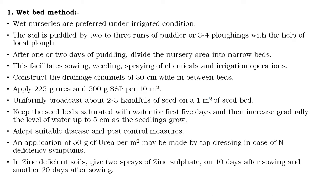If nitrogen deficiency is observed in the nursery bed, apply 50 grams of urea per meter square by top dressing. In case of zinc deficiency soils, give two sprays of zinc sulfate — one at 10 days after sowing and another at 20 days after sowing. This wet bed method is especially followed where rainfall is more or the irrigation facility or source of water is plentiful.